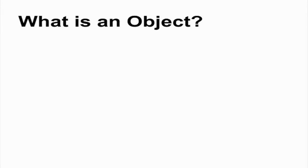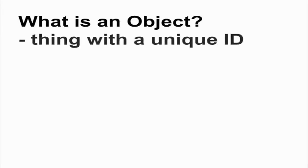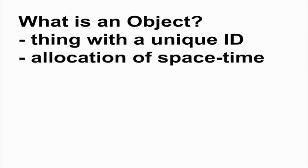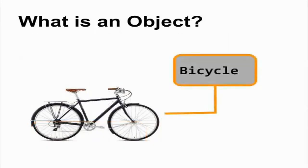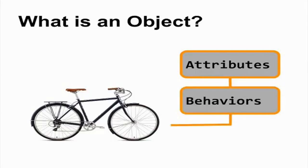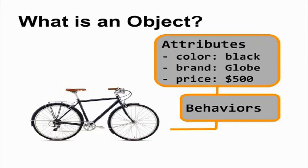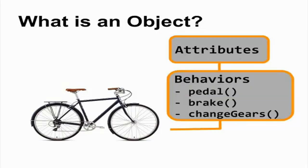In general, we can think of an object as something with a unique identity, both in the real world and in the software world. A bike, for instance, is an object with a unique identity since it occupies a unique location in space and time. It also possesses its own set of attributes and behaviors. Attributes may include brand name, color, and price. Behaviors may include pedal, brake, and change gears.